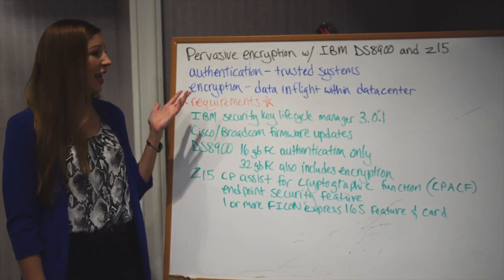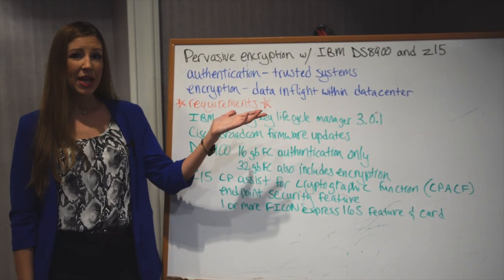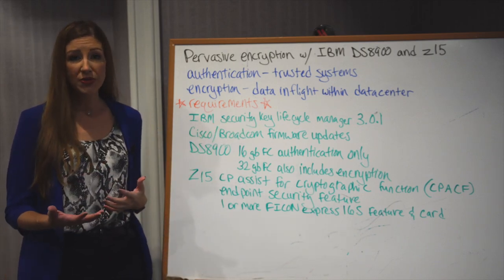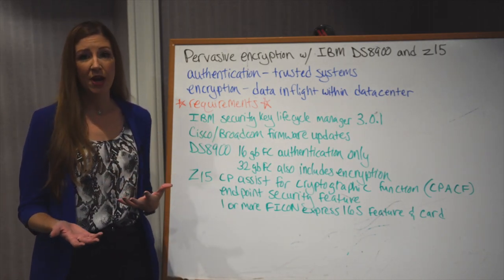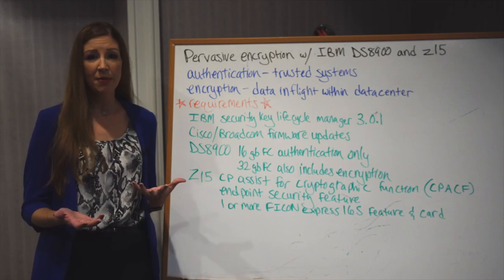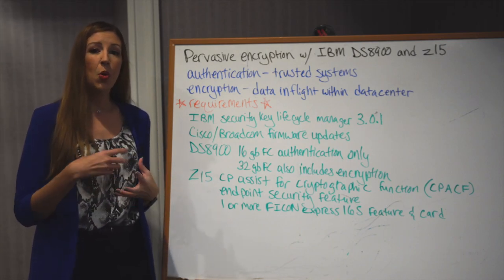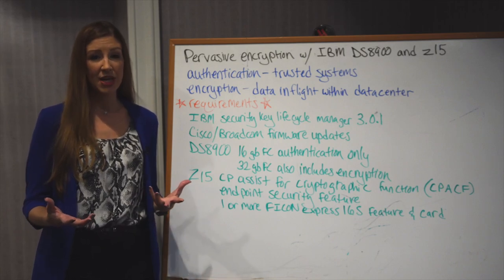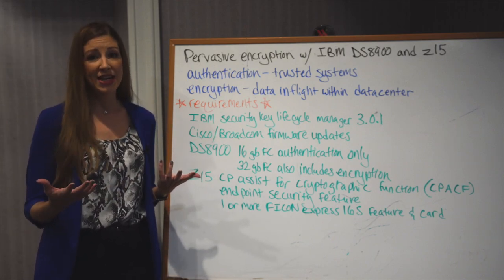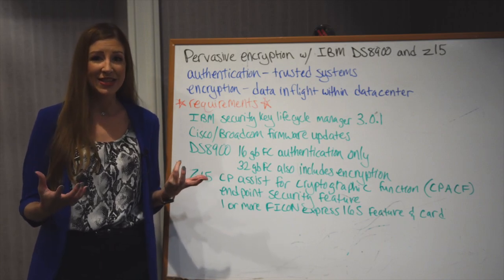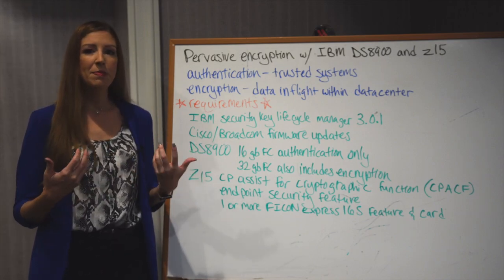Pervasive encryption includes authentication, which is trusted systems, meaning that a rogue host cannot write data or read data from a storage subsystem in your environment, or a rogue application cannot request data from that storage subsystem. This way, both the Mainframe and the DS8000 are known entities, and it can prevent other outside entities from being used.